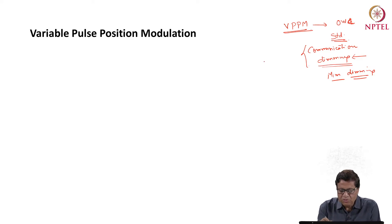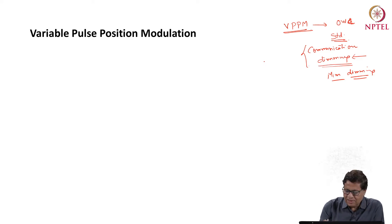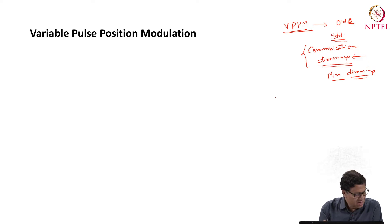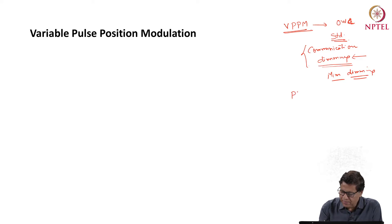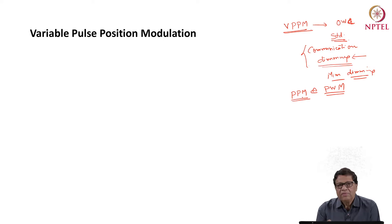We will analyze VPPM — Variable Pulse Position Modulation. It is actually a combination of PPM (Pulse Position Modulation) and PWM (Pulse Width Modulation), which will meet both dimming criteria as well as communication criteria.